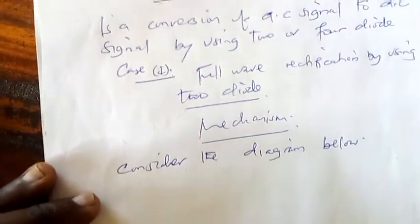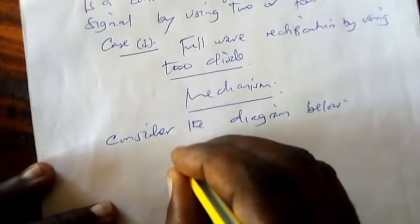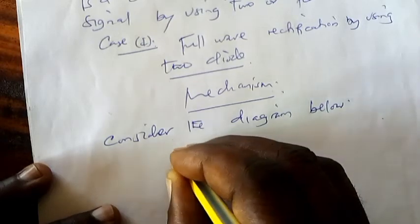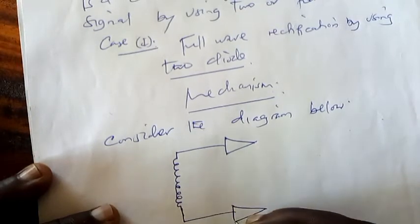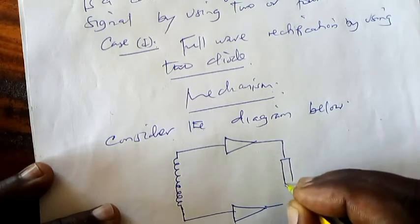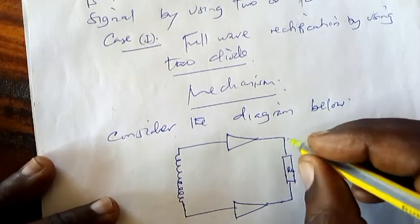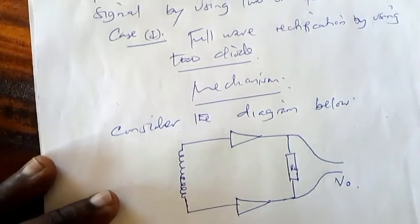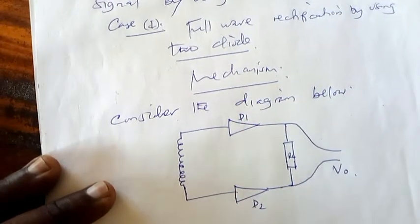We are using two diodes. Let me draw this. This is a coil. Then here we have the first diode. Here we have the second diode. This is called loading resistance. The main function of loading resistance is to parcel the output voltage. This is output voltage. Assume this is to be D1, this is to be D2.